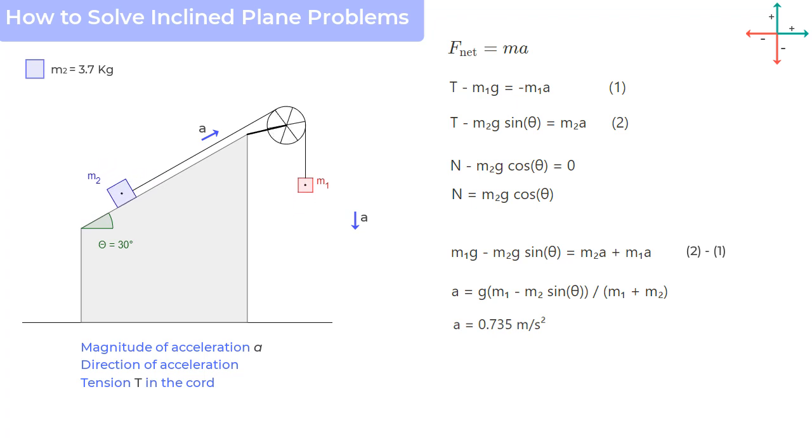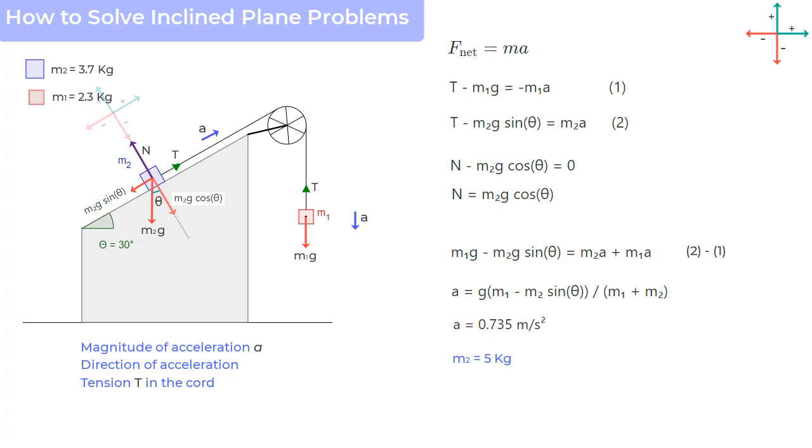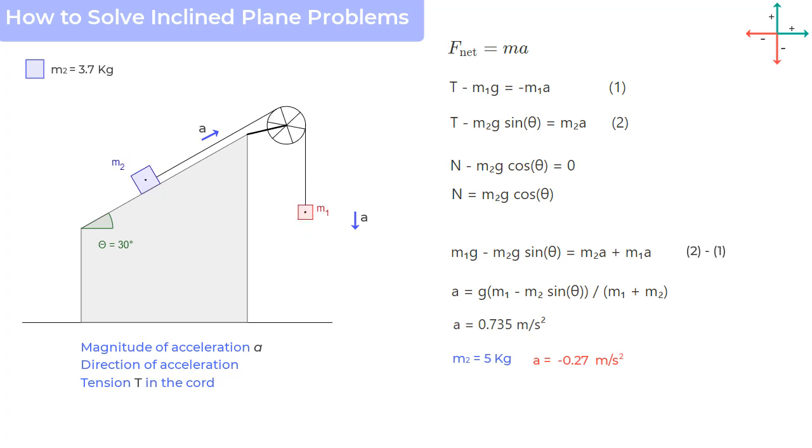As an example, let us say mass m2 was 5 kilograms instead of 3.7 kilograms, then calculations for a would have given us a value of minus 0.27 meters per second square or a negative number. And that would have told us that our assumption that m1 will go down would have been incorrect. And actually, m1 would have gone up and m2 would have slid down like this.